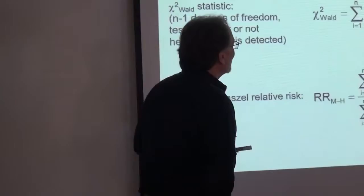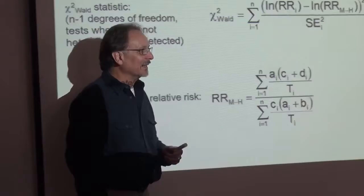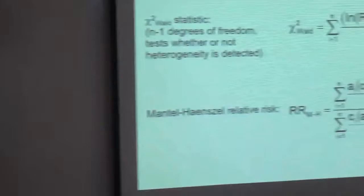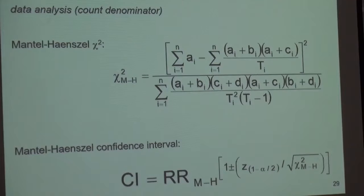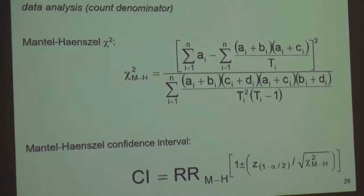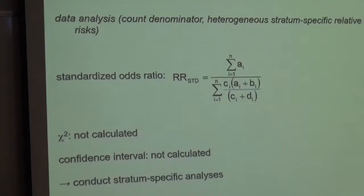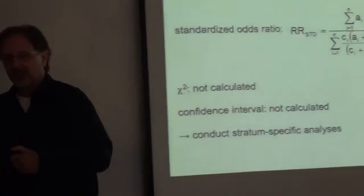The Mantel-Haenszel relative risk is a little bit different in length, but nevertheless it's the same idea. Be careful to add all of the numerator and then add all of the denominator before you do the division. The Mantel-Haenszel chi-squared is identical, and the Mantel-Haenszel relative risk is identical except we substitute the relative risk for the odds ratio. There is a standardized measure for non-homogeneous, heterogeneous data, and it is analogous to that which we have for the case-control.